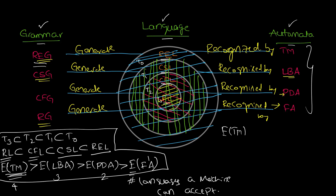The corresponding expressive powers are 4, 3, 2, and 1. On a special note, the expressive power of a Turing machine is equivalent to the expressive power of a computer. Any language which can be accepted by a Turing machine can also be accepted by a computer, and vice versa. If a language cannot be recognized by a computer, it cannot be recognized by the Turing machine either. So the power of the Turing machine is equivalent to the power of a computer.